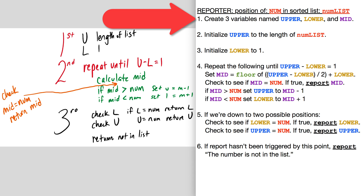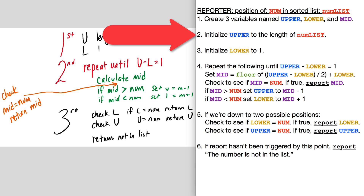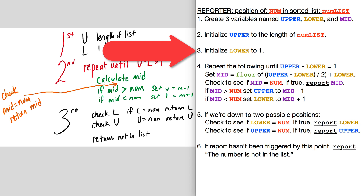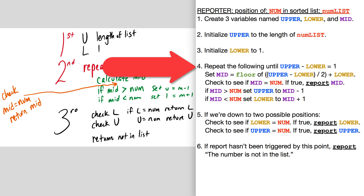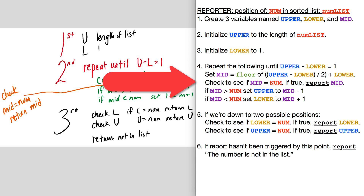First, we're going to create three variables named upper, lower, and mid. Then we're going to initialize upper to the length of the num list, initialize lower to one, and then we're going to keep checking the middle until we find something. If we find that the middle equals the number we're looking for, we're going to report that value — the position that contains the num we are looking for.